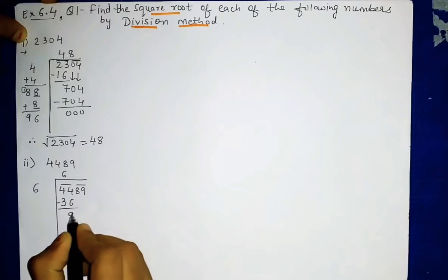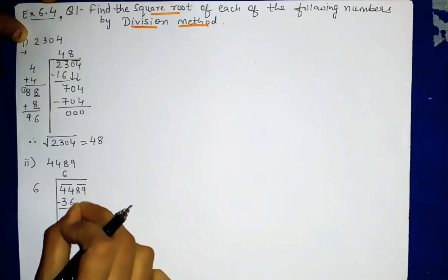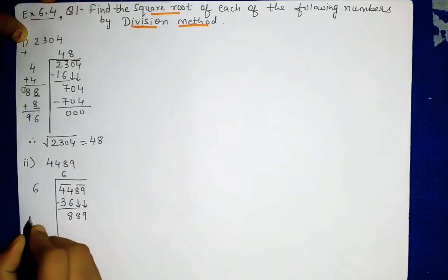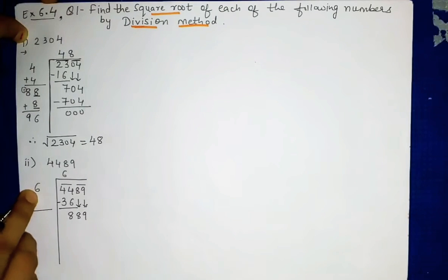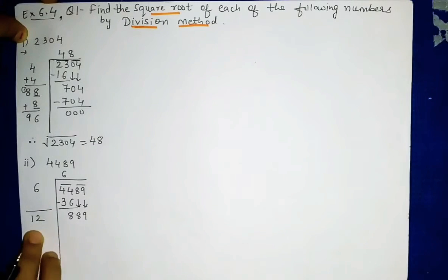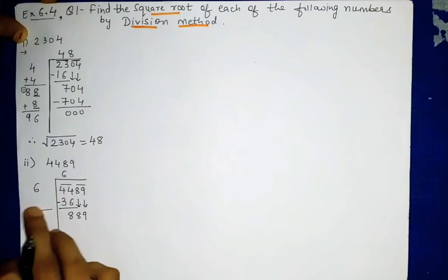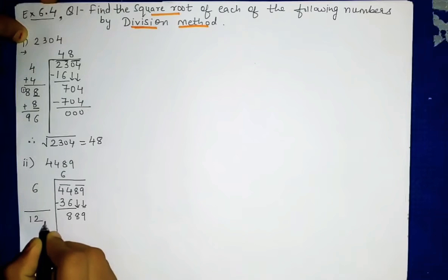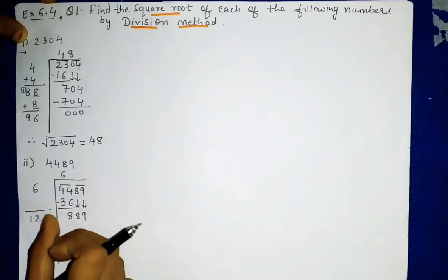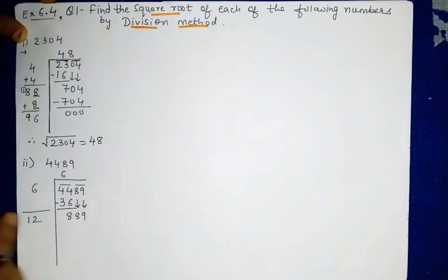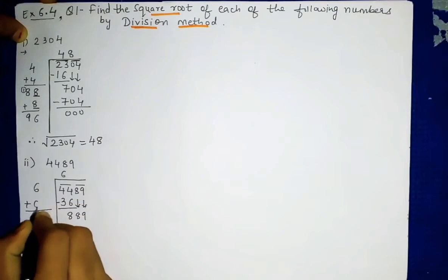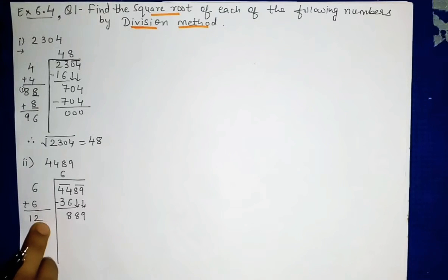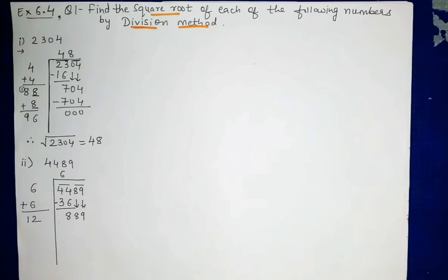We subtract: 44 minus 36 equals 8. The second pair '89' is brought down together, giving 889. On the divisor side we take double of 6: 6 plus 6 is 12. So our divisor is 12. Whatever number we keep here at the ones place, that same number we write in the quotient and multiply. You can also show 6+6=12 here.